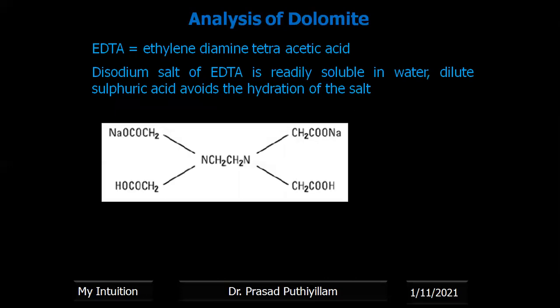The structure of the disodium salt of EDTA: Na separates as Na⁺ and forms –CH₂COO⁻, so two Na molecules separate. The remaining structure has –CH₂COO⁻ on two sides. Therefore, when writing chemical reactions, we can represent it as Na₂H₂X, where the two hydrogens and the remaining structure with negative charges are represented. Or simply H₂X, or even EDTA. Even though we use the disodium salt of EDTA for convenience, we name it as EDTA most of the time.